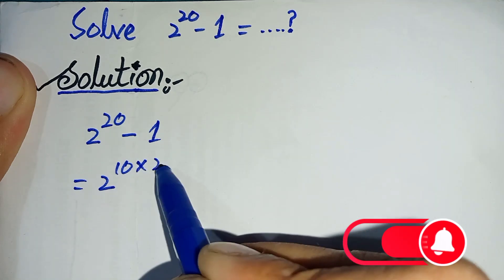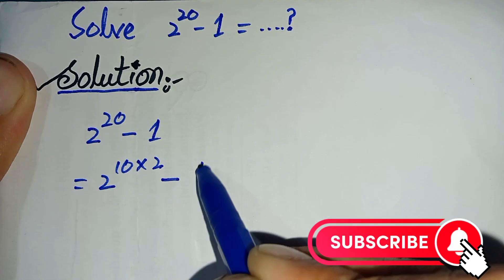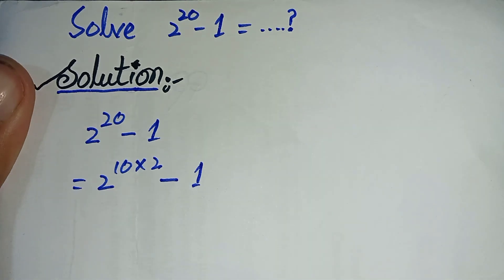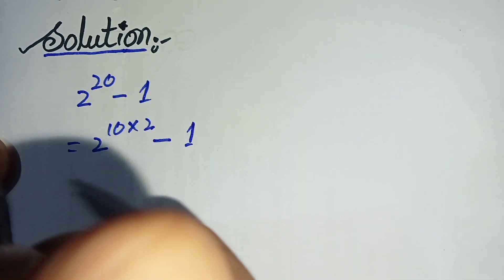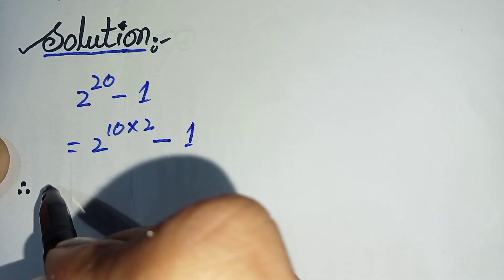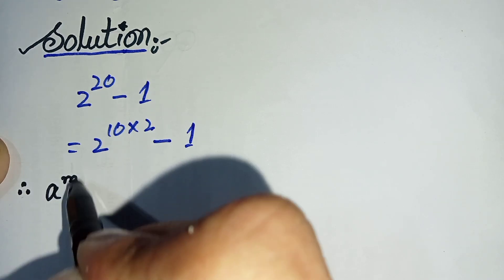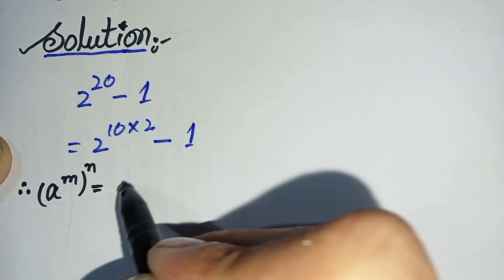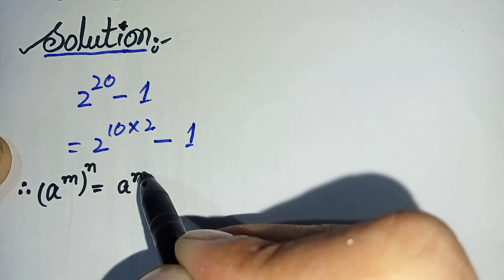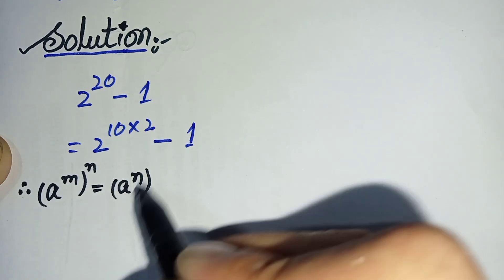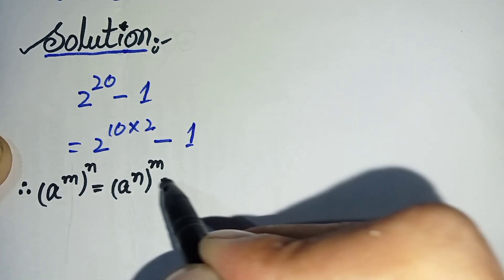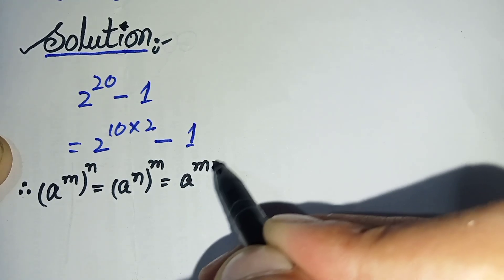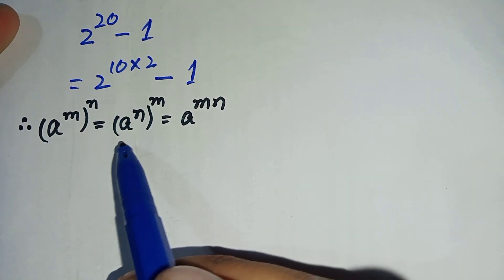Here we will use an exponent formula: (a^m)^n = (a^n)^m = a^mn. By using this formula, this equation can be written as...